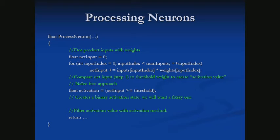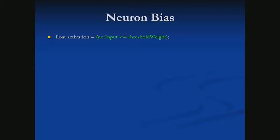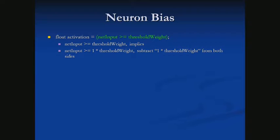Thinking about that activation value, where net input is greater than or equal to threshold weight, we're going to start moving things around. We could add a 'times one' to the right-hand side: net input is greater than or equal to one times threshold weight. It doesn't change anything yet, but it helps us in a few steps.